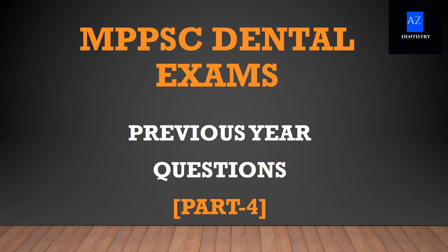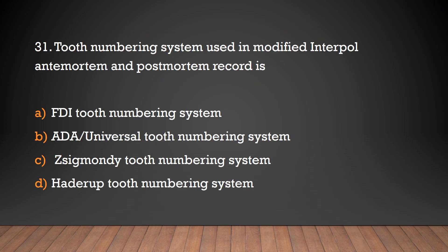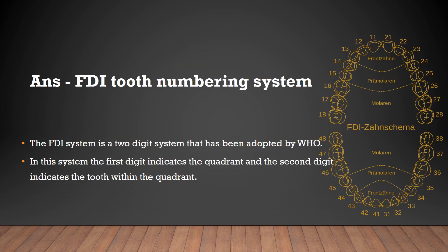Welcome to A2Z Dentistry. The tooth numbering system used in modified Interpol ante-mortem and post-mortem records is the FDI tooth numbering system. Other systems include the ADR universal tooth numbering system, Sigmondi, and Haderup systems. The FDI system is a two-digit system adopted by WHO, where the first digit indicates the quadrant and the second digit indicates the tooth within the quadrant.